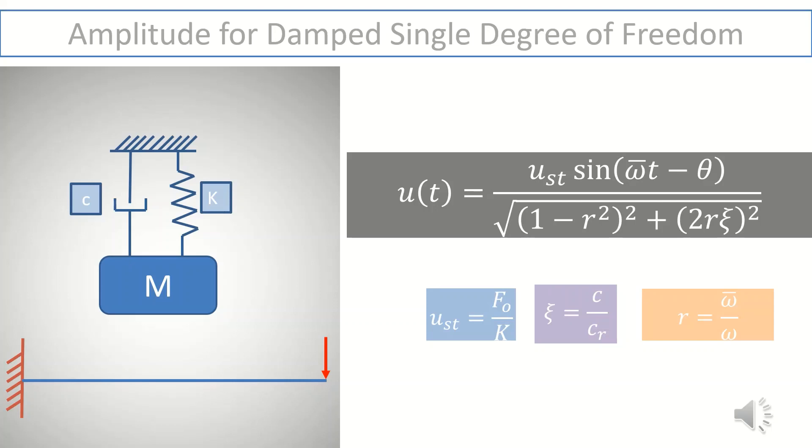Now in case of resonance, R will be equal to one and hence the denominator value will be governed only by xi. So the damping will play a very vital role for controlling the amplitude during resonance. Let's see it with a couple of actual examples for single degree of freedom.